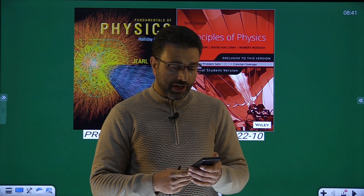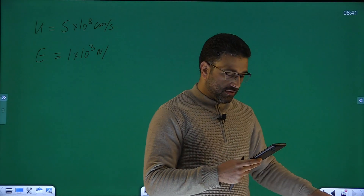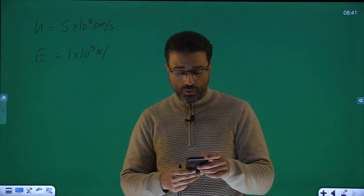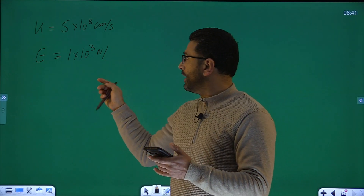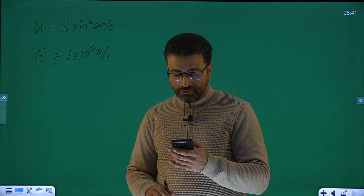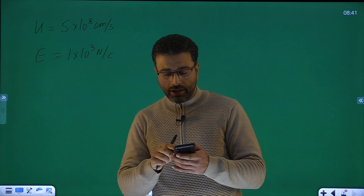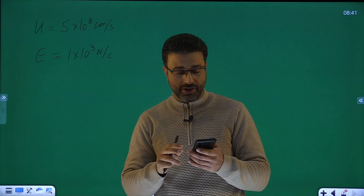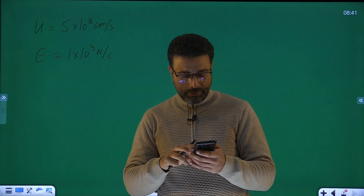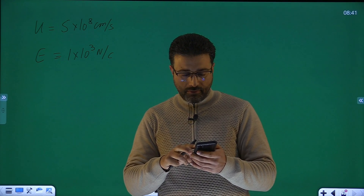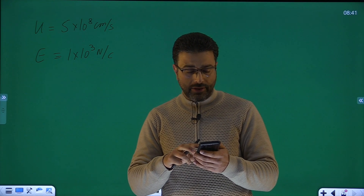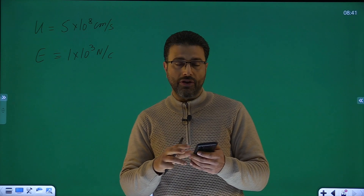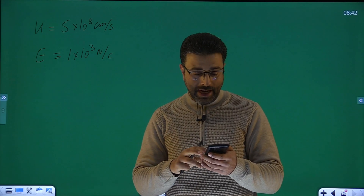An electron with the speed of 5 into 10 to the power 8 centimeter per second enters an electric field of magnitude 1 into 10 to the power 3 Newton per Coulomb, travelling along a field line in a direction that retards its motion. Part A: how far will the electron travel in the field before stopping momentarily — so we need to find stopping distance. How much time will have elapsed — so we need to find stopping time.